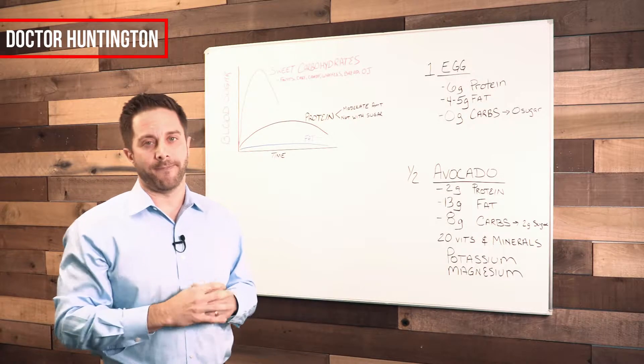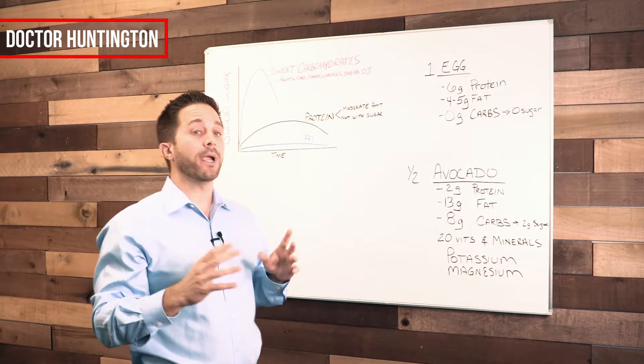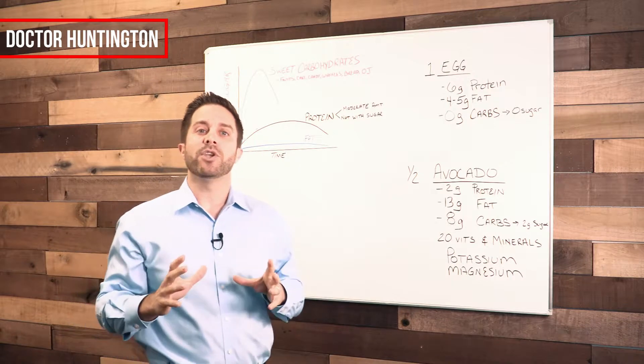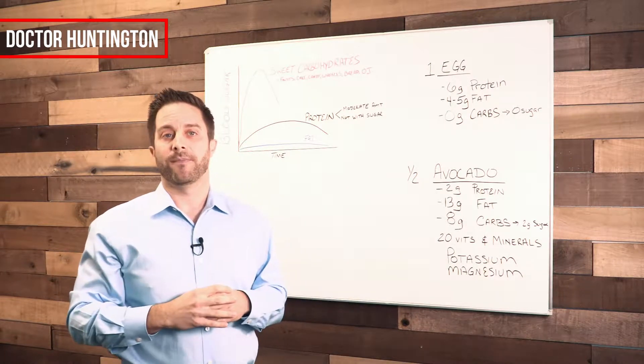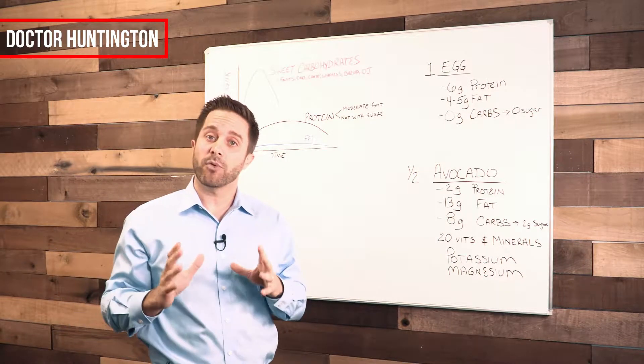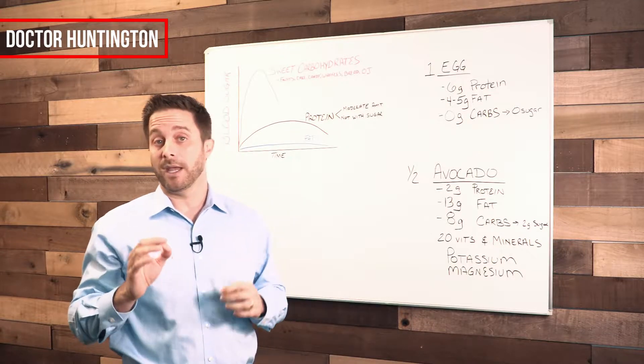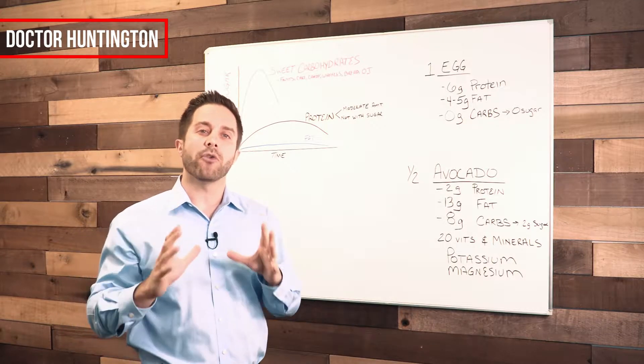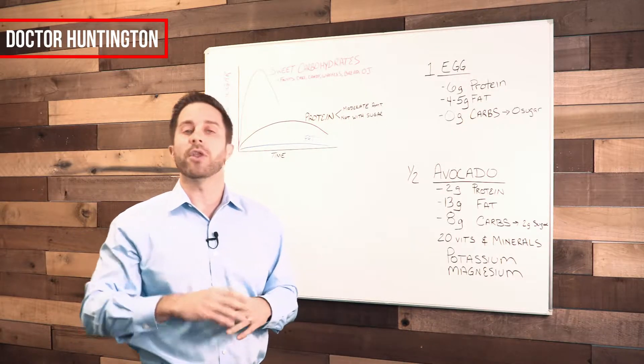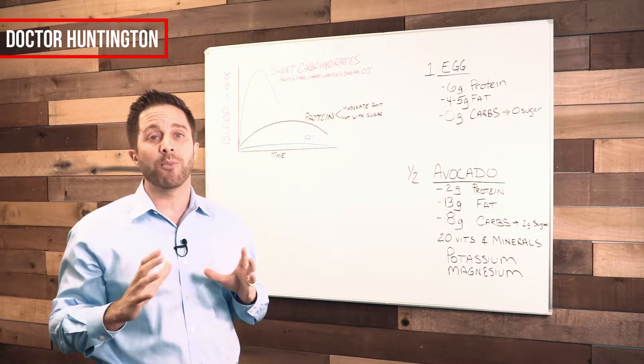So what should you eat? If we look at this graph, it looks like we should be eating protein and fats. In fact, eating protein and fats is not only diabetic friendly, but it's also a much more healthy choice than all the carbohydrates that most people are eating for breakfast.